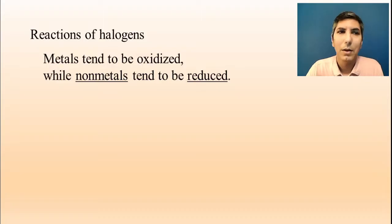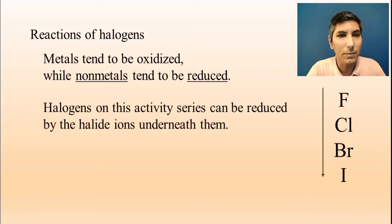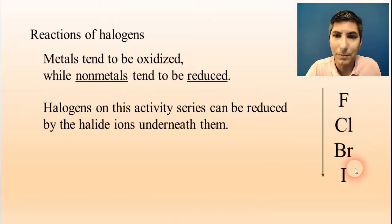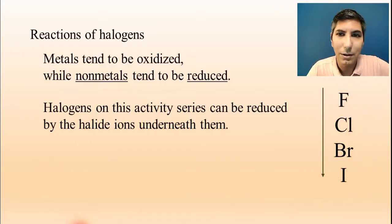Like we said last time, we normally oxidize metals. Non-metals tend to be reduced. They have their elemental state, which has a charge of zero, and then they tend to go down in charge, which means they have to gain electrons — that's reduction. There's an activity series for halogens, and if you look at this activity series, you'll see that it's basically synonymous with the halogen group, just written out from top to bottom on Group 17 of the periodic table. Halogens on this activity series can be reduced by the ions that are underneath them on the list, which makes it rather simple to keep straight.